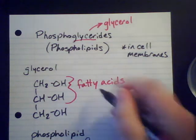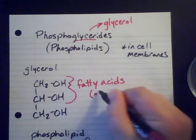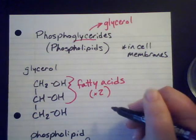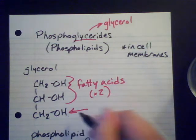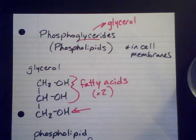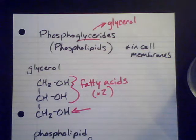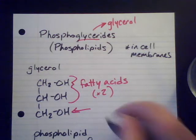So we'll have two of them reacting with fatty acids. But on the third one, instead of reacting with a fatty acid, this third position is actually going to be joined by an ester linkage. So this is going to be a phosphate ester.